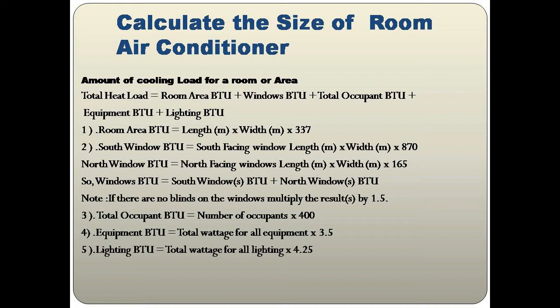Total Occupants BTU accounts for how many people are in the room. Equipment BTU covers electrical equipment installed in the room, such as computers, ceiling fans, or refrigerators. Lighting BTU accounts for how many lights are installed, because lights emit heat. By calculating each factor individually and summing them up, we can determine the required air conditioner size.